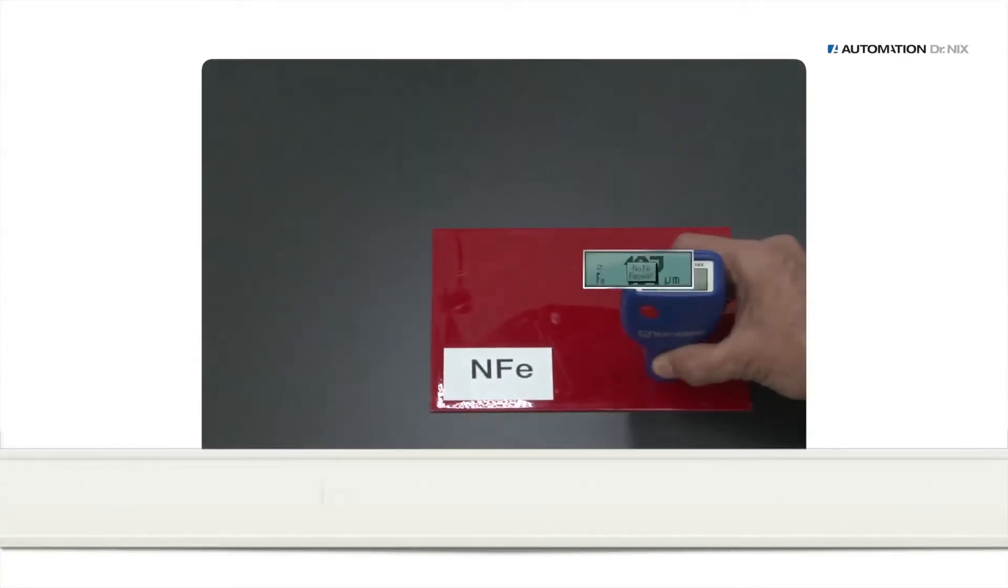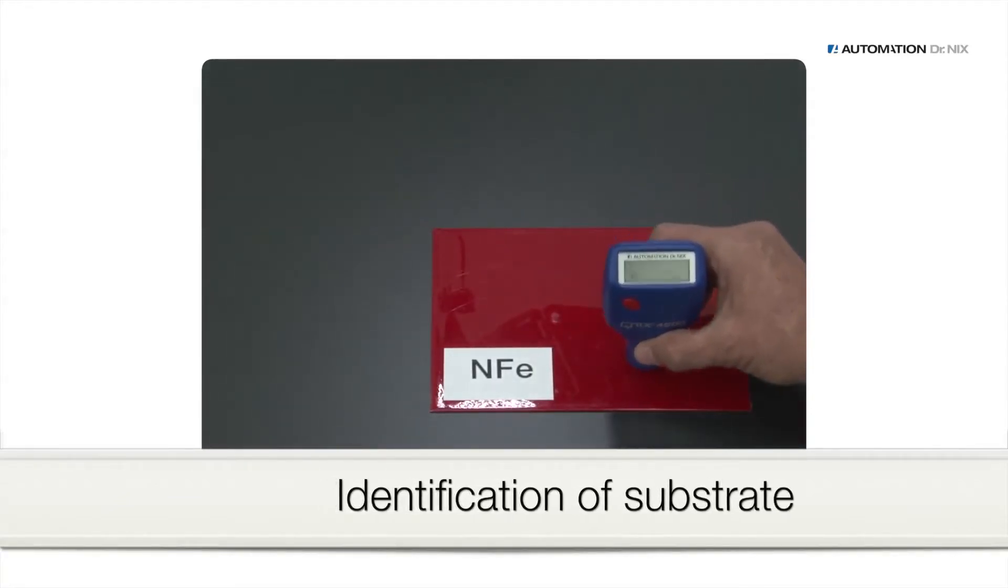In the dual mode, the gauge notifies you whether the substrate is iron or aluminum.